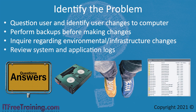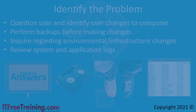The next step is to review the application and system logs. This will give you an idea of what is happening with the computer. If we know when the problem started occurring, we can check for any strange error messages in the log at that time. In this example, a strange error message appeared at the time the problem started — which could be related to the problem we are having.